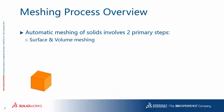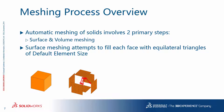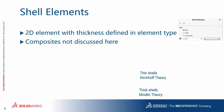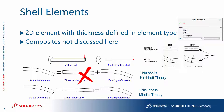An overview of the meshing process behind the scenes: the automatic meshing of solids involves two primary steps — surface and volume meshing. Surface meshing attempts to fill each face with equilateral triangles of default element size. Once surfaces are filled, the volume is meshed with three-dimensional TET elements. For 2D shell elements, there are three formulations available. Laminated composite shells are too specific, so we will not talk about that here. For general shells, we have thin or thick shells — sometimes called Kirchhoff theory for thin shells and Mindlin theory for thick shells. In both models, the primary bending deformation is included. The distinction is that in thin shells the less important shear deformation is neglected, whereas in thick shells the effect of shear deformation is also included.